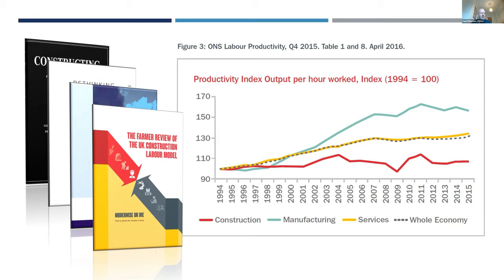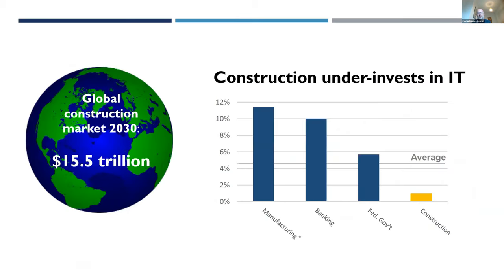For an industry as big as construction — 7% of GDP — when one industry sector flatlines, it has a serious impact upon the economy of a country as a whole. And one factor in this flatlining performance is underinvestment in IT. Construction underinvests in IT at only about 1% of revenues, compared to other sectors which invest significantly higher proportions.